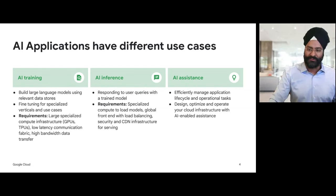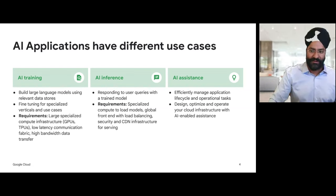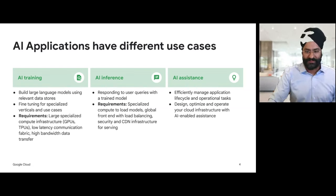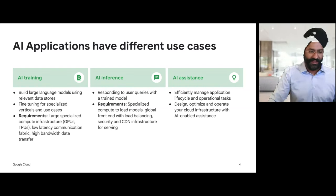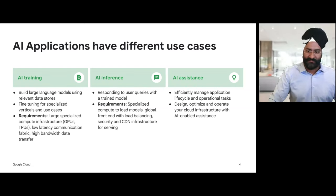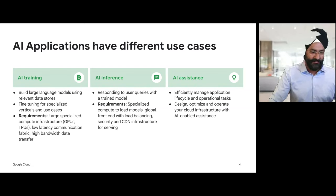For inferencing, it's all about responding to user prompts with a trained model. The requirements are specialized compute to load models and a global front-end which performs load balancing to optimize performance and security for serving these models. You might have seen in the industry that a lot of AI infrastructure is being leveraged for operational systems. AI can help each one of our customers efficiently manage application lifecycle, troubleshoot operational tasks such as configuration, or optimize your infrastructure. You can now design, optimize, and operate your cloud infrastructure with an AI-enabled assistance.